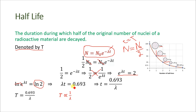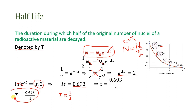The value of ln(2), calculated with a calculator, is 0.693. So we have λT equal to 0.693, and finally T equal to 0.693 divided by λ. This is the final expression for half-life, where T is the half-life and λ is the radioactive decay constant.